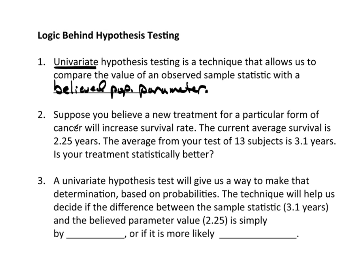Suppose you believe a new treatment for a particular form of cancer will increase survival rate. The current average survival rate is 2.25 years — this is what we believe the current survival rate is based on the current treatment. Now you take a test of 13 subjects and you find your average x-bar is 3.1 years.